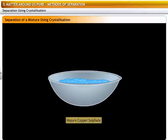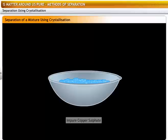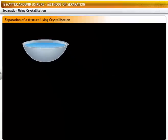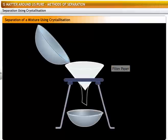Take a sample of impure copper sulphate in a china dish. Dissolve the copper sulphate using as little water as possible. Filter the copper sulphate solution.